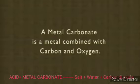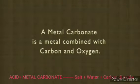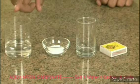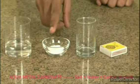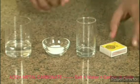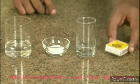A metal carbonate is a metal combined with carbon and oxygen, like copper carbonate and calcium carbonate. You can take hydrochloric acid, calcium carbonate, a beaker, and a matchbox for this experiment.